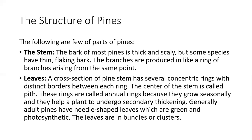The branches arise from the same point in a ring-like arrangement. Looking at a cross-section of the tiny stem parts, there are several distinct rings with distinct borders between each ring. The center of the ring is called the pith. These rings are called annual rings because they grow seasonally and help the plant undergo secondary thickening. The leaves are needle-shaped, green, and photosynthetic, enabling the process of photosynthesis. The leaves are arranged in bundles or clusters.